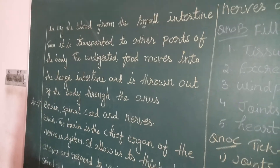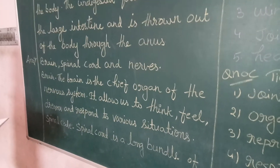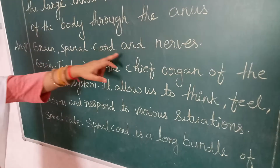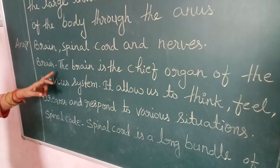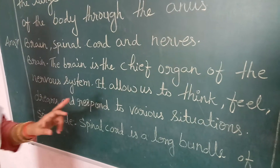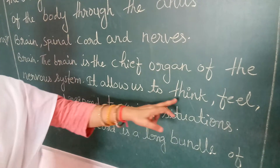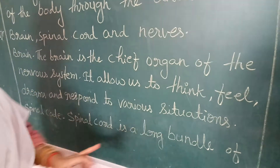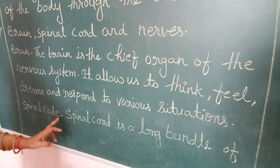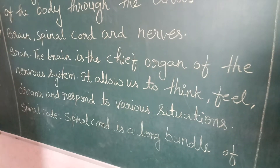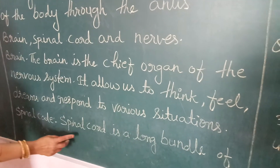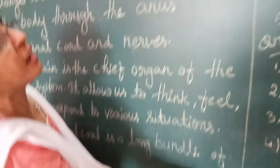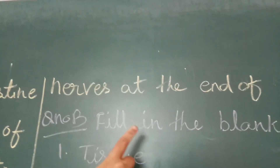The brain is the chief organ of the nervous system. It allows us to think, feel, dream, and respond to various situations. The spinal cord is a long bundle of nerves at the base of the brain.